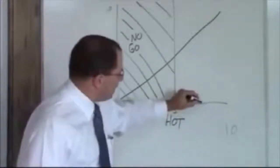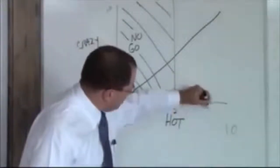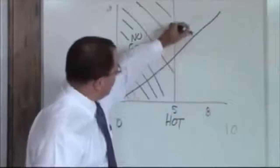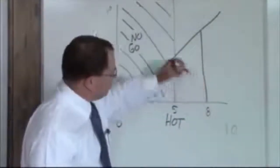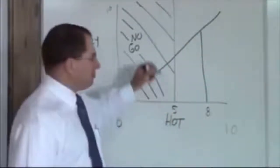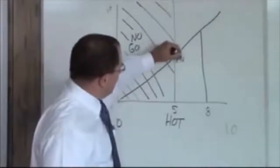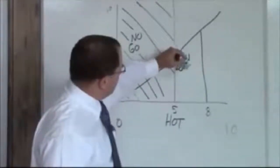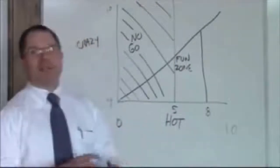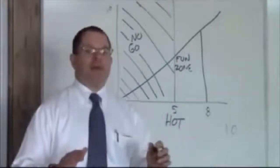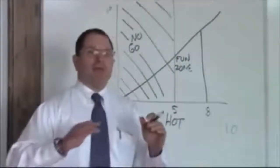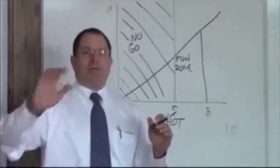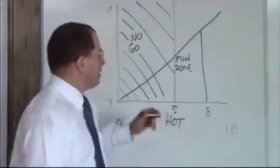Above a five and to about an eight and below the crazy line, this is your fun zone. You can hang out here and meet these girls and spend time with them. That's your fun zone, but keep in mind when you're in the fun zone, you want to move out of the fun zone to a more permanent location.